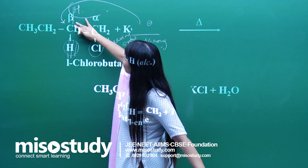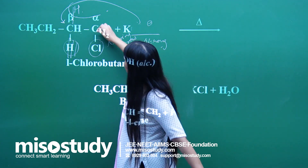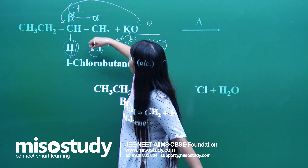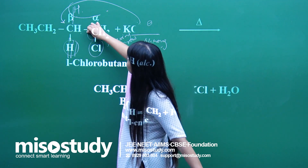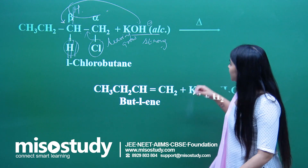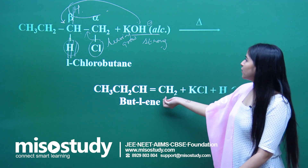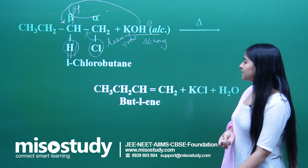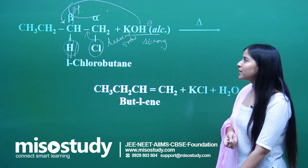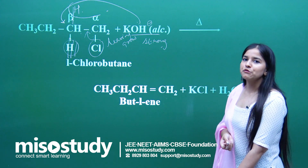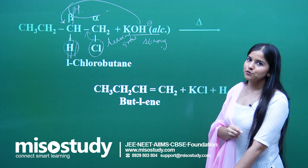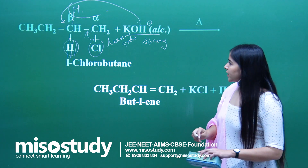This carbon will have less electron density at that point. Chlorine, being a good leaving group, will go off, generating a double bond right here. That is how the reaction occurs and how we get the product but-1-ene. Always remember: SN2 is favoured here.